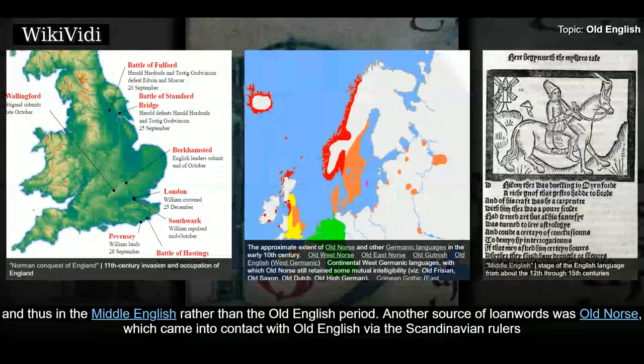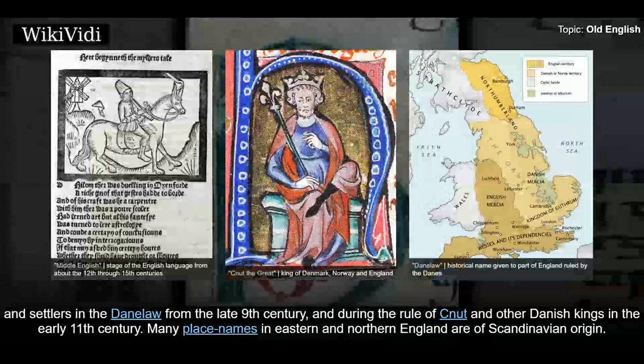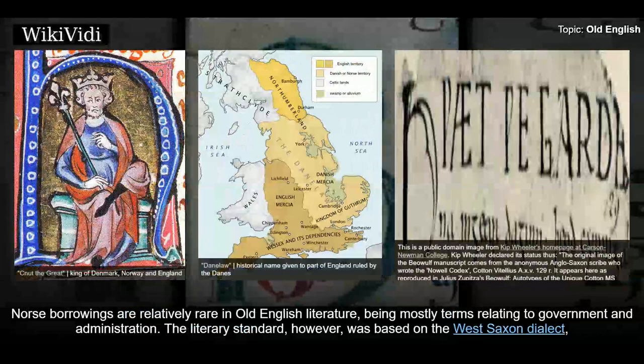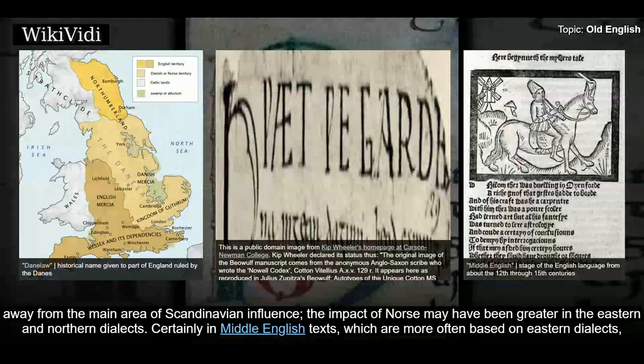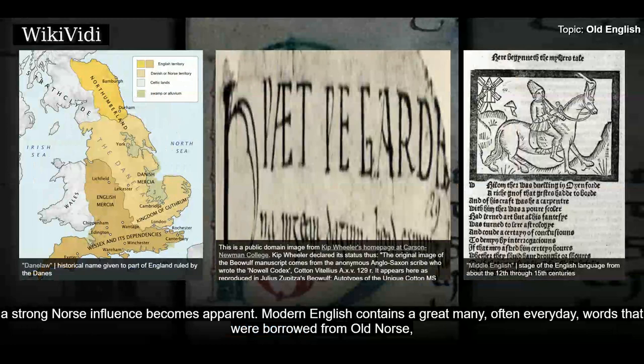Another source of loanwords was Old Norse, which came into contact with Old English via the Scandinavian rulers and settlers in the Danelaw from the late 9th century, and during the rule of Canute and other Danish kings in the early 11th century. Many place names in Eastern and Northern England are of Scandinavian origin. Norse borrowings are relatively rare in Old English literature, being mostly terms relating to government and administration. The literary standard was based on the West Saxon dialect, away from the main area of Scandinavian influence, but the impact of Norse may have been greater in the Eastern and Northern dialects. In Middle English texts, which are more often based on Eastern dialects, a strong Norse influence becomes apparent.